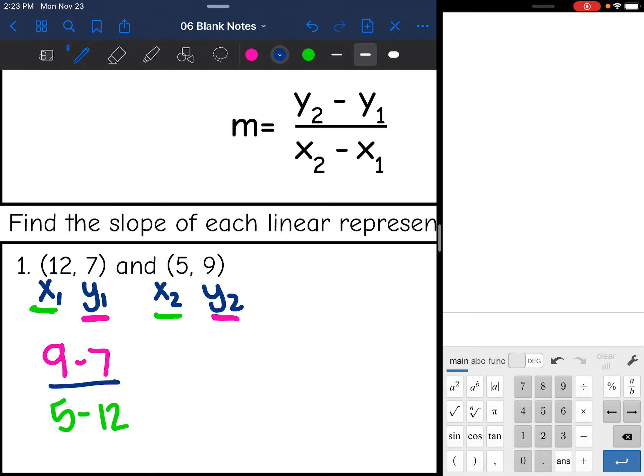Okay, you might be tempted to type this whole thing into your calculator. Do not do that. We need to do one line at a time. So 9 minus 7 is 2. And then 5 minus 12, that's going to give me a negative number. I'm going to double check it in the calculator. And 5 minus 12 is negative 7. So that slope is negative 2 sevenths.